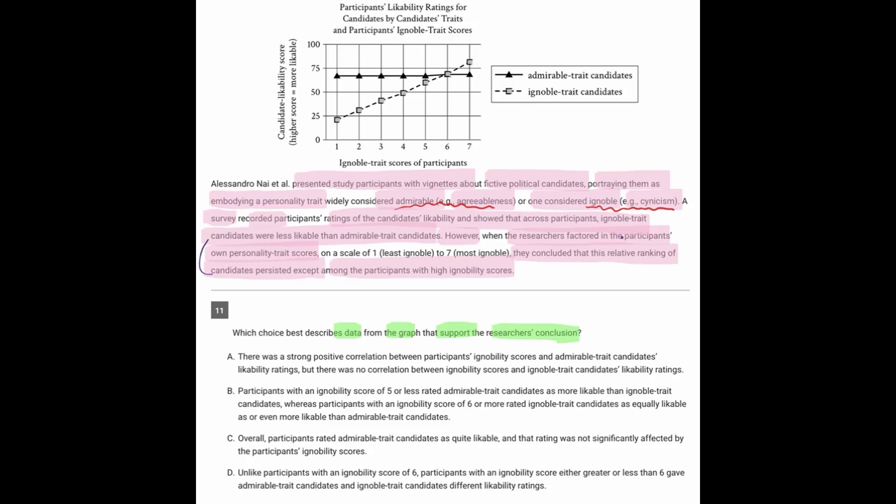So the part that seems significant is that part right at the end. Well, of course, because it says they concluded. They concluded that the relative ranking persisted except among the participants with high ignoability scores.